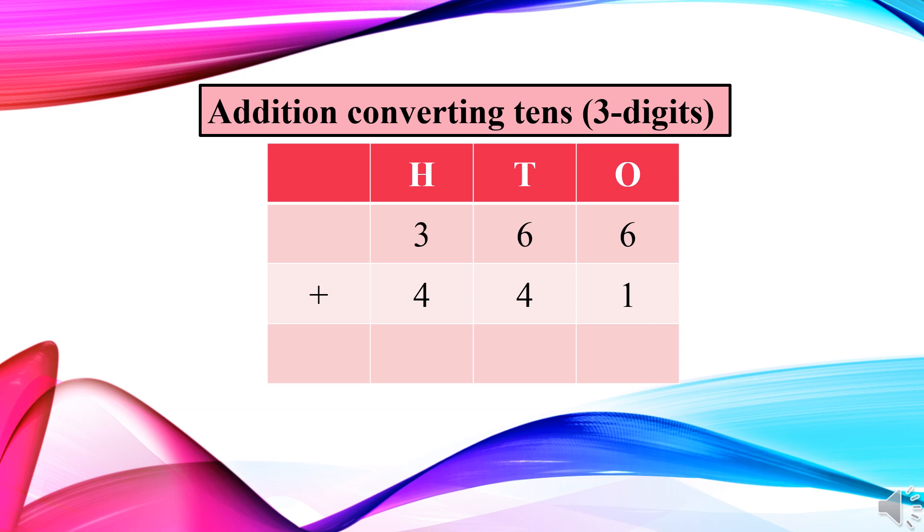So firstly, tell me one thing. From where do we have to start the solution? Yes, from the right hand side, from ones place. So at ones place, we have six ones and one one. So we have to add both numbers, right? After adding one and six, what we will get? Yes, seven.